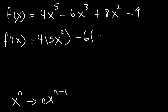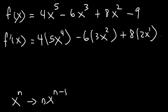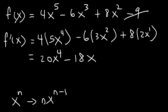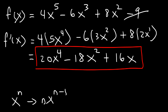The derivative of x cubed is 3x squared, and the derivative of x squared is 2x. The derivative of the constant is simply 0. So 4 times 5 is 20, 6 times 3 is 18, and 8 times 2 is 16. The final answer is 20x to the 4th power minus 18x squared plus 16x.